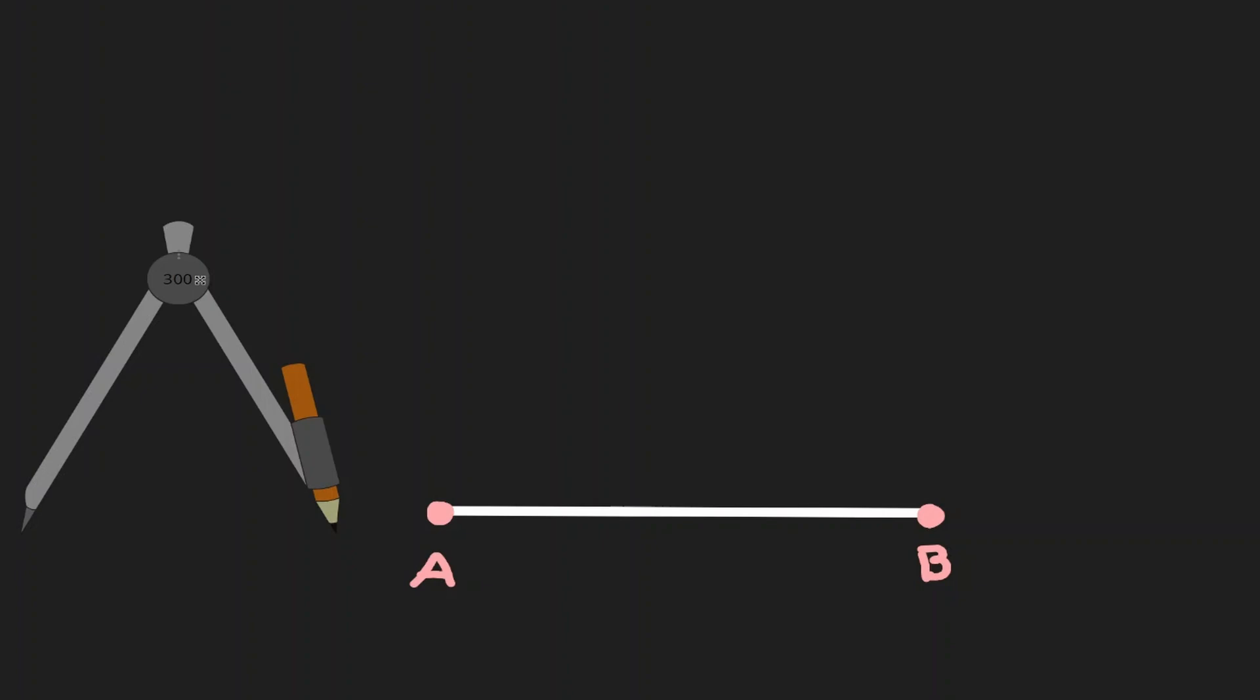Given the line segment AB, we're going to start by putting our compass on A and getting the measurement of the line segment AB. Now that I have this measurement, I'm going to create an arc going upward.